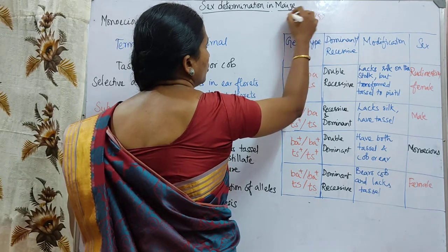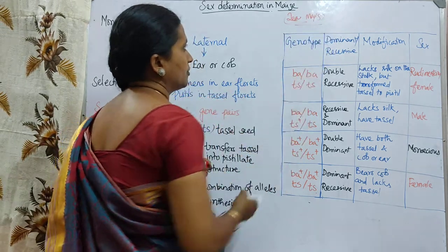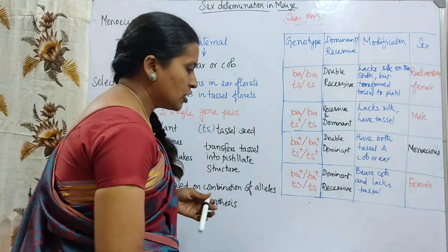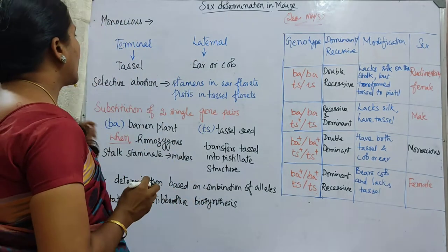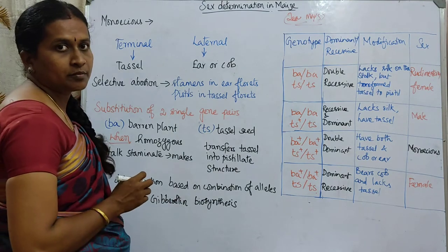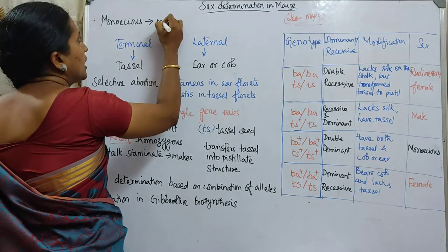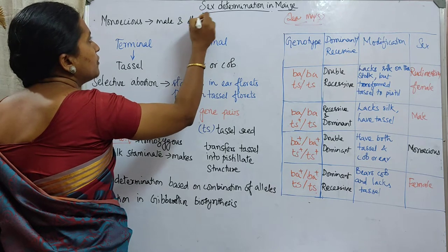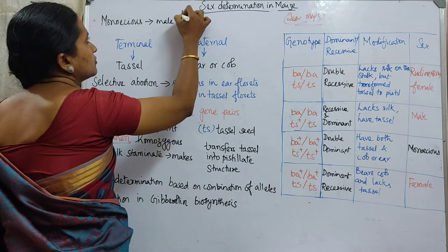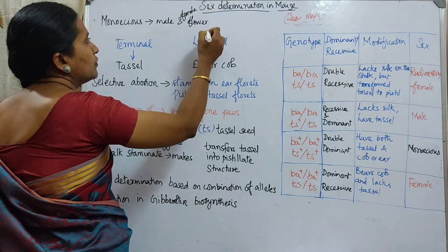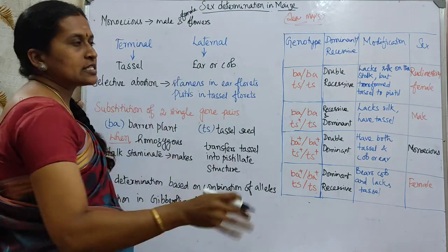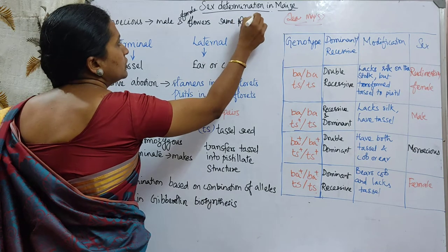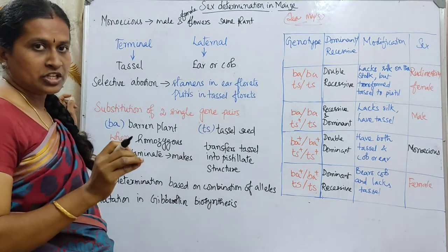So what is special about maize? Maize is generally a monoecious plant. Monoecious means male and female flowers are present on the same plant. We call this condition monoecious.